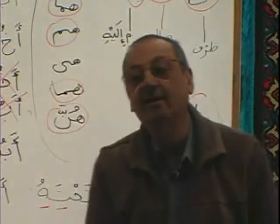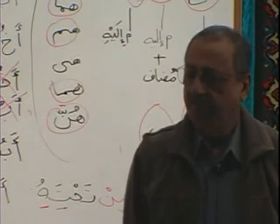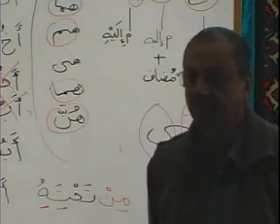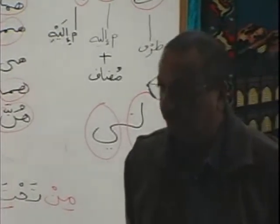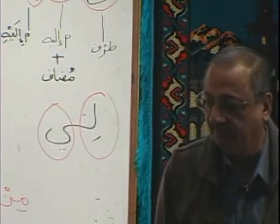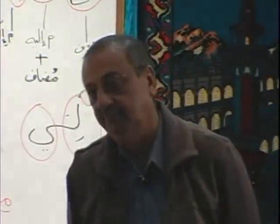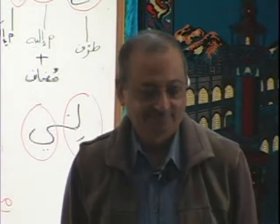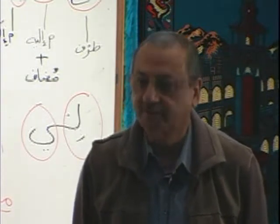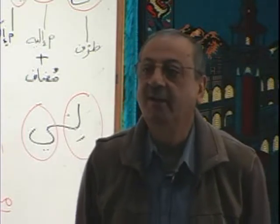Now we will learn another rule. Jaar majroor, or zarf and mudafili — they will never, ever, ever be mubtada. Even if they come in the beginning of the sentence, they can never be mubtada.